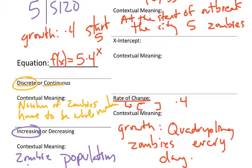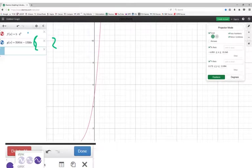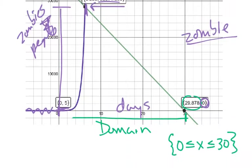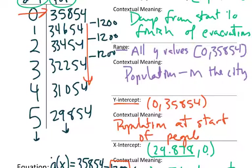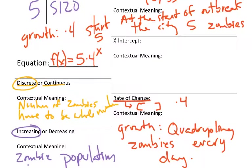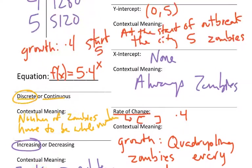Now x-intercept for exponential. Remember with exponentials, you have that asymptote. So our asymptote is going to be here at the x-axis. So it's actually never going to have an x-intercept. Because there's no point where there's no zombies.